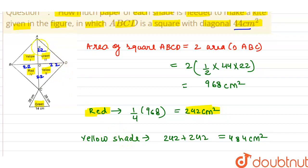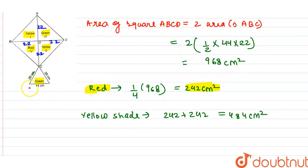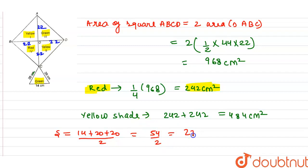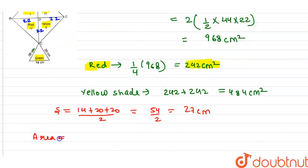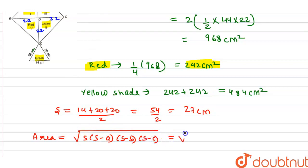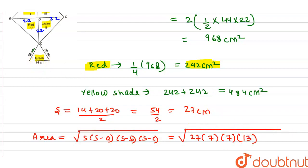Now for the green shade, there is one triangle. We add this triangle area using Heron's formula. The semi-perimeter is 14 plus 20 plus 20 upon 2, which is 54 by 2 = 27 cm. The area formula is square root of s(s−a)(s−b)(s−c). Here s = 27, s minus a: 27 minus 20 = 7, and s minus b: 27 minus 14 = 13.